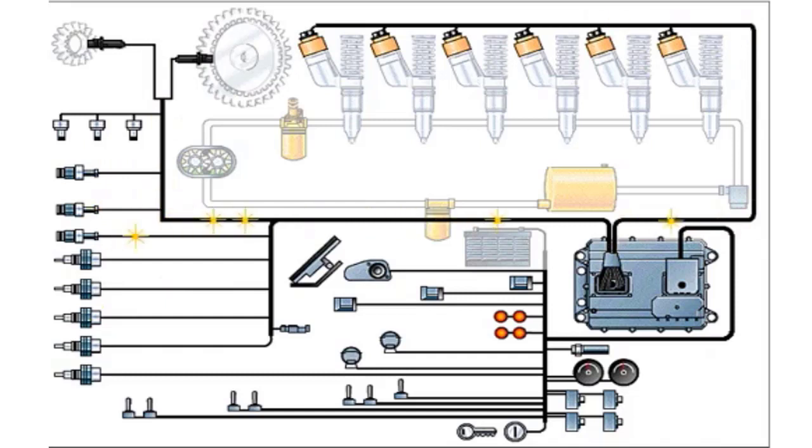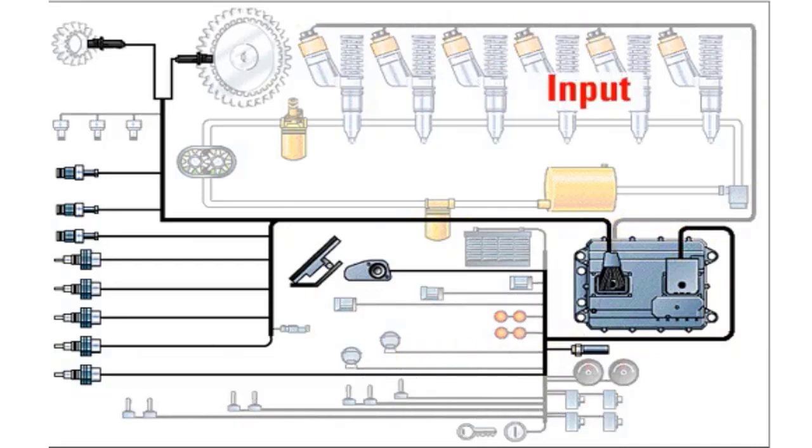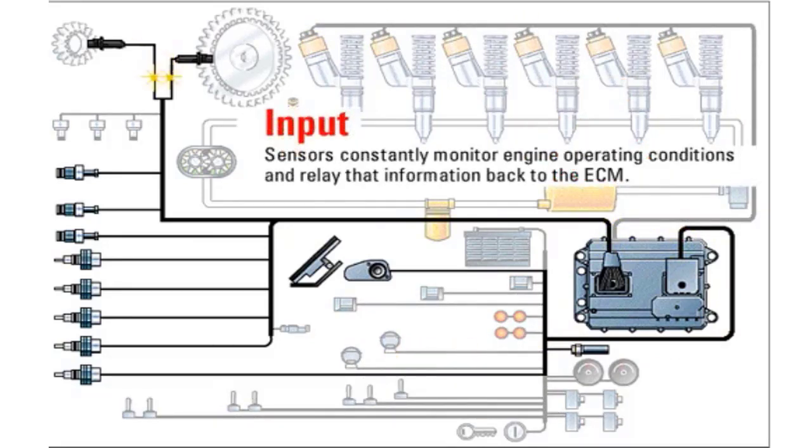The electronic control system consists of three types of components: input, control, and output. Sensors constantly monitor engine operating conditions and relay that information back to the electronic control module.